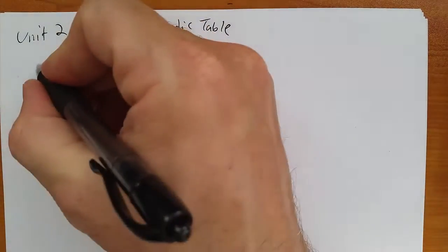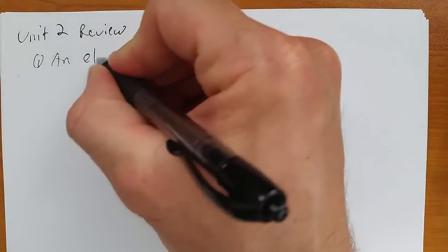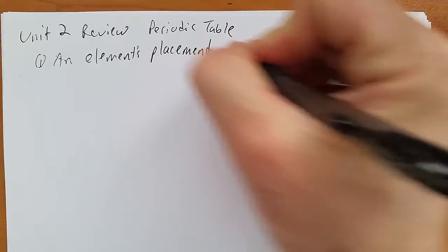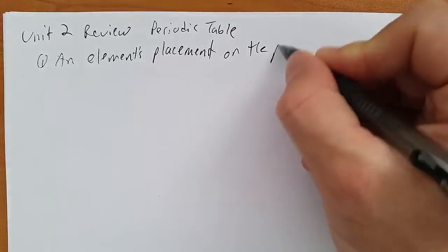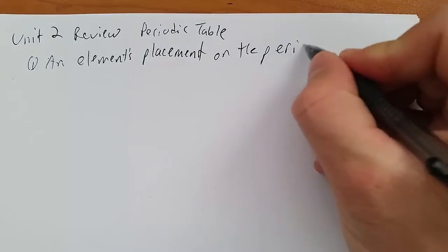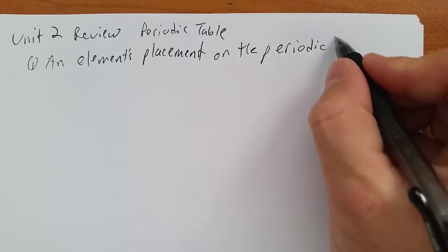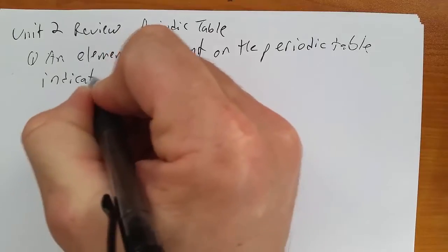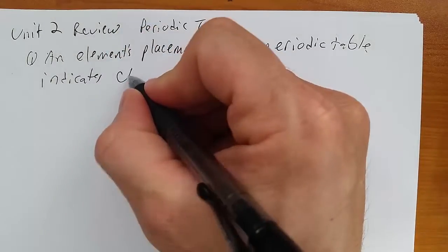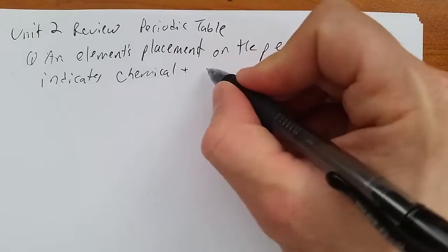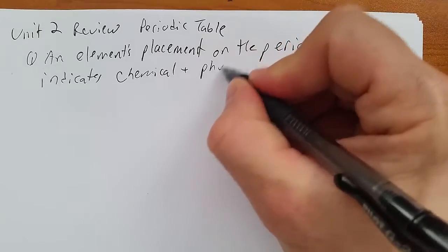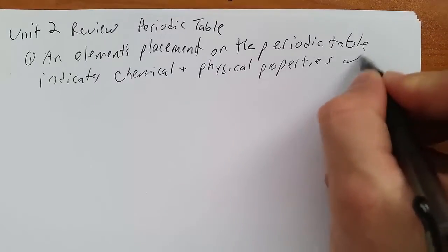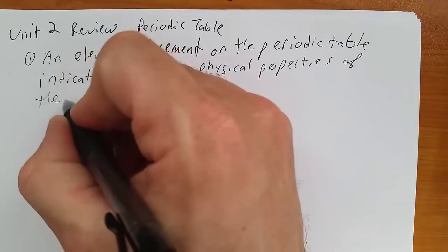So an element's placement on the periodic table indicates chemical and physical properties of the element.